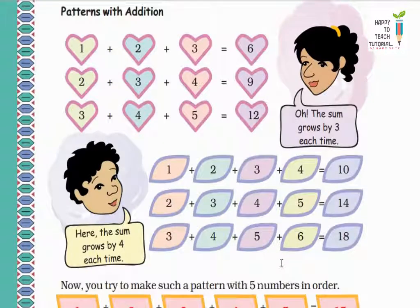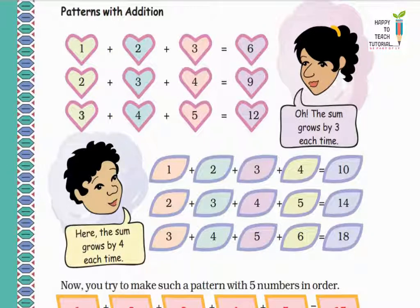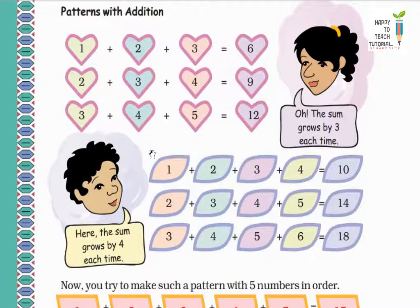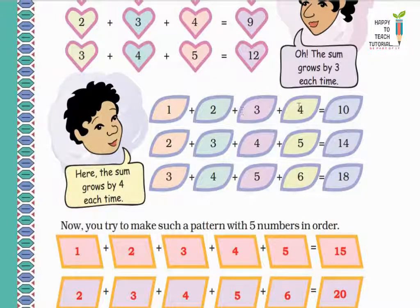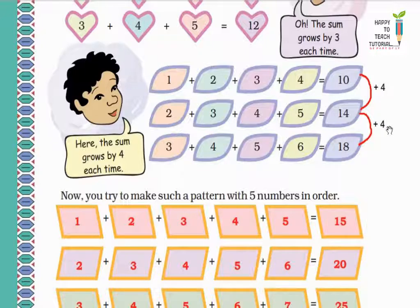Now let's look at patterns with addition. We start with three consecutive numbers: 1 plus 2 plus 3 equals 6. Then starting from 2: 2 plus 3 plus 4 equals 9. Then starting from 3: 3 plus 4 plus 5 equals 12. The sum grows by 3 each time. Now with four consecutive numbers: 1 plus 2 plus 3 plus 4 equals 10; 2 plus 3 plus 4 plus 5 equals 14; 3 plus 4 plus 5 plus 6 equals 18. The sum grows by 4 each time.